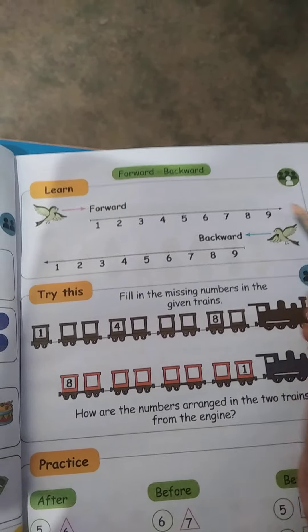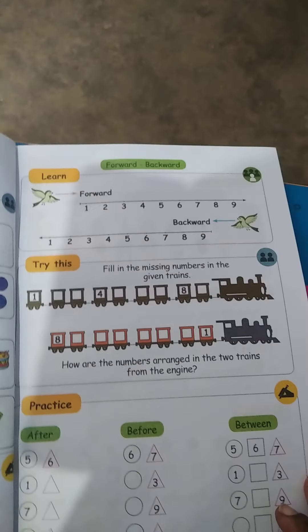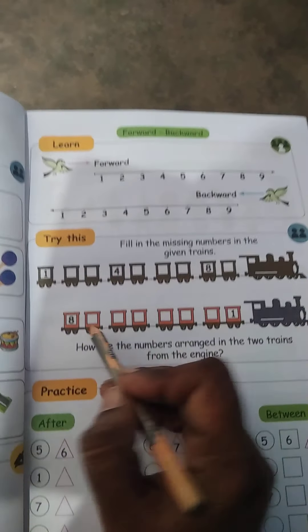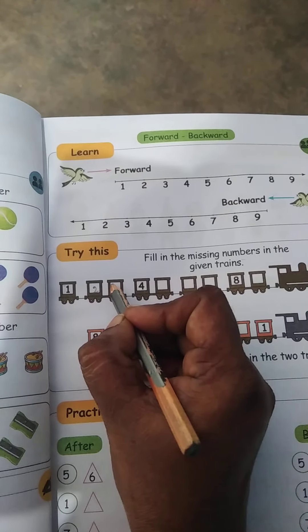I will go to this page: 1, 2, 3. Rising level. Number bigger number. Bigger number, smaller to bigger. Counter. Bigger to smaller, backward counter. Fill the missing numbers in the given train. Train, missing numbers.